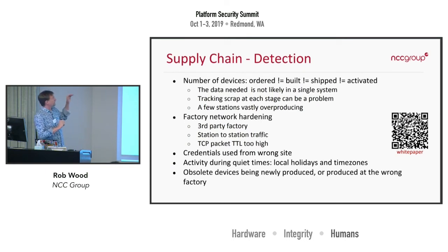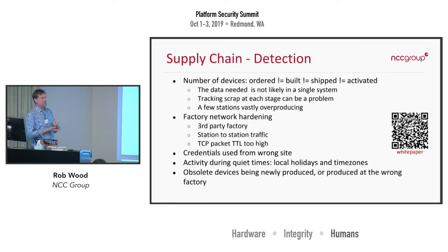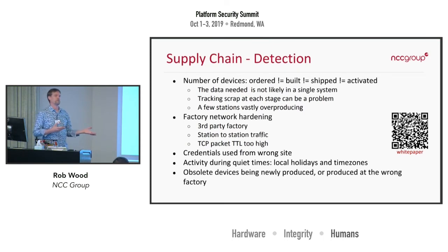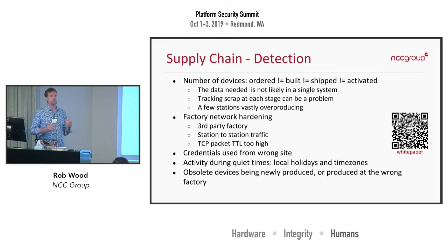Just to highlight one insight: the number of devices you ordered from the factory, the number they built, the number they shipped, and the number your customers subsequently activated are very tightly correlated numbers. If you're seeing wild discrepancies — like they built twice as many boxes as they shipped — then maybe they're selling boxes to somebody else using your design, or getting counterfeit components. There are all kinds of shenanigans that can go on in the factory.